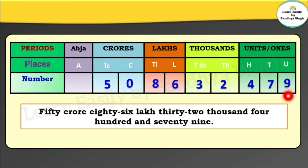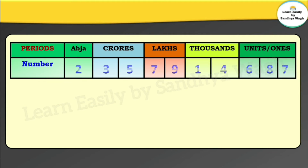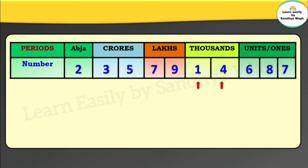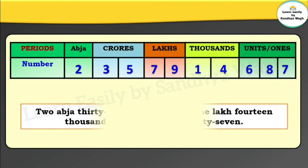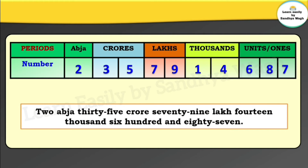Let us take one more example. In the abja period we have 2, so 2 abja. In the crore period we have 3 and 5, so 35 crores. In the lakhs period, 79 lakhs. In the thousands period, 14 thousand. In the units period, 687. So the number is: 2 abja 35 crore 79 lakh 14 thousand 687.